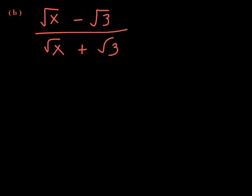For this last example, please do not think you can cross-cancel the square root of x over the square root of x or the square root of 3 over the square root of 3. We never cross-cancel between terms — we can only cross-cancel common factors. Here you see subtraction and addition, so these are terms, not factors. You can't cross-cancel like that.